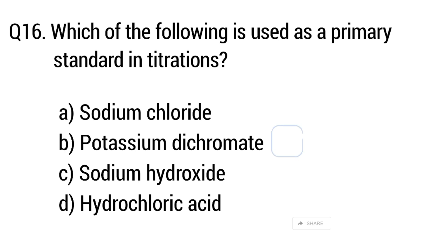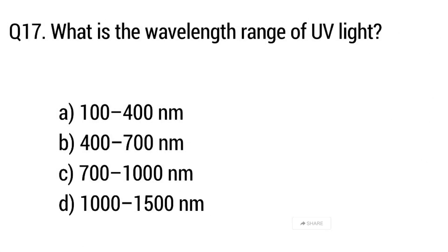Question number 17. What is the wavelength range of ultraviolet light? The right answer is option A: 100 to 400 nanometers.